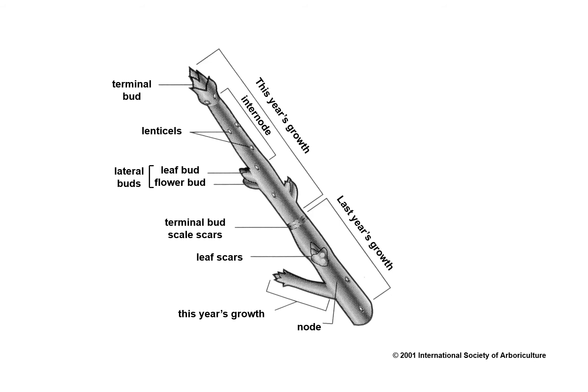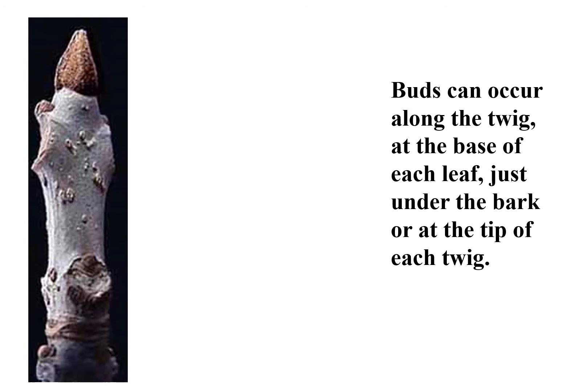Twigs are small stems that provide the support structure for leaves, flowers, and fruits. Branches support the twigs. Buds can occur along the twig, at the base of each leaf, just under the bark, or at the tip of each twig. A bud is an unexpanded shoot or flower. Terminal bud scale scars are useful in measuring twig elongation. You can measure annual tree growth by measuring the distance between terminal bud scale scars, or nodes. The area between two nodes is known as an internode. See if you can identify the different portions of this twig before the labels appear on the screen.